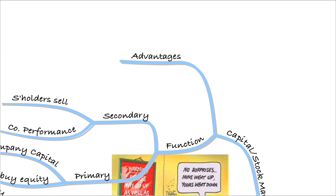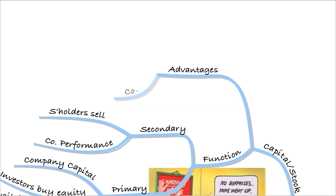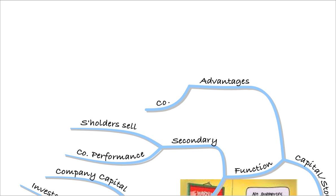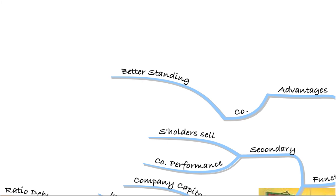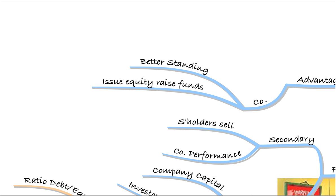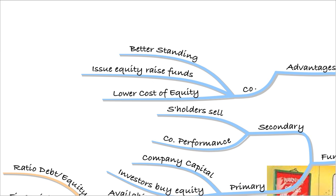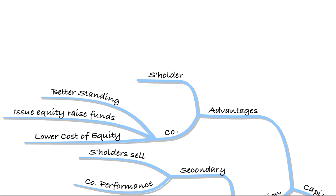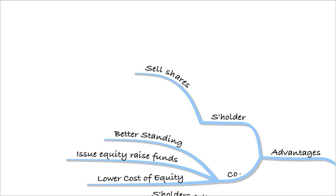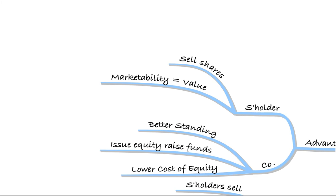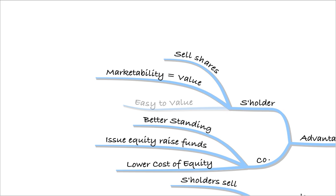We then looked at the advantages of listing on the capital or stock market. For the company, they would have better standing, could issue equity to raise funds more easily, and it can lower their cost of equity. By being listed they're seen as less risky, so the dividends they have to pay may be lower. For the shareholder, the advantage is that they can sell their shares more easily. Marketability will enable them to get more value, and shares will also be easy to value.